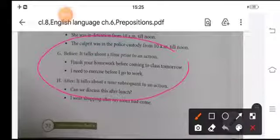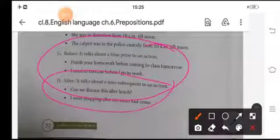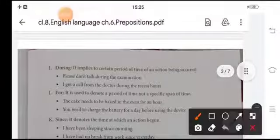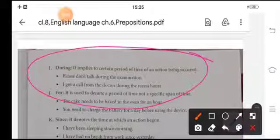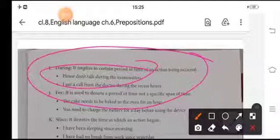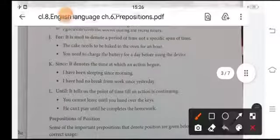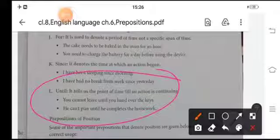Before, it talks about a time prior to an action, and after, it talks about a time subsequent to an action. The word during, it implies to a certain period of time of an action being occurred. For example, please don't talk during the examination. And the word for is used to denote the period of time, not a specific span of time. And since it denotes the time at which an action began, and until tells us the point of time till an action is continuing.